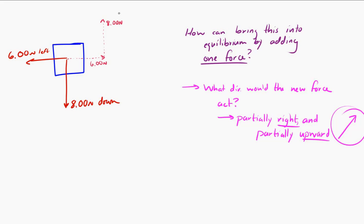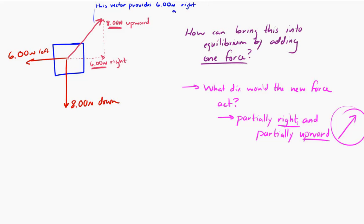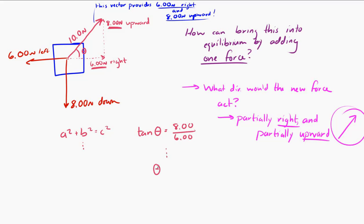I need some kind of force that provides six Newtons to the right and eight Newtons upward. A force that points six Newtons to the right and eight Newtons upward — I'll draw that in. Using vector addition, I drew my two vectors head to tail: six Newtons to the right and eight Newtons upward, and then drew the resultant vector. Using the Pythagorean theorem, that resultant is ten Newtons. Using tangent, the angle is 56.1 degrees. So to bring this into equilibrium, we have to add ten Newtons at an angle of 56.1 degrees.